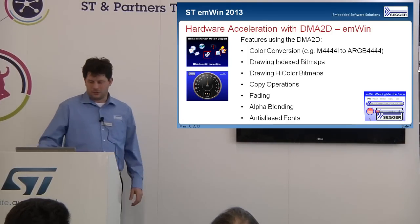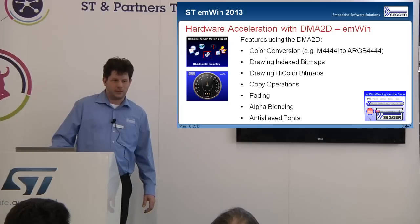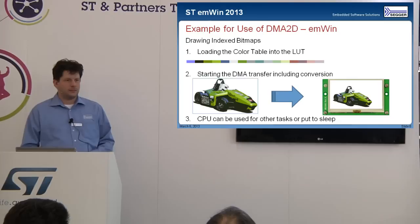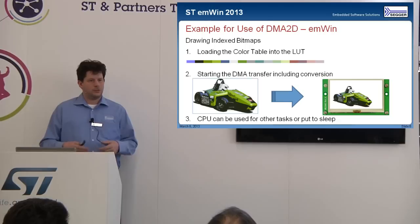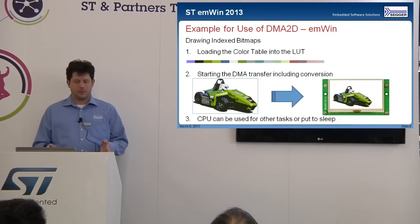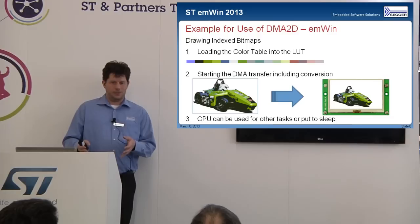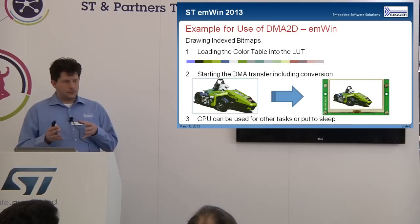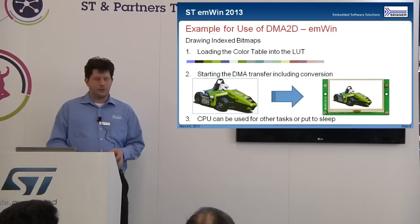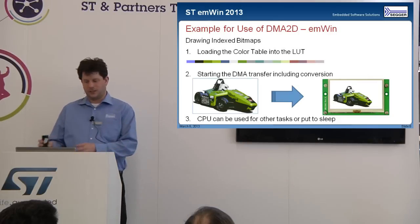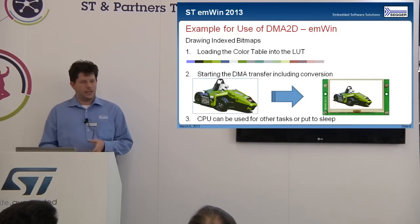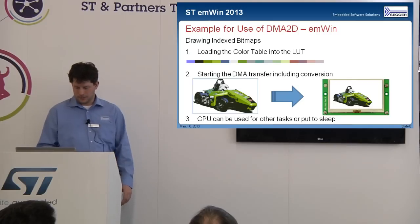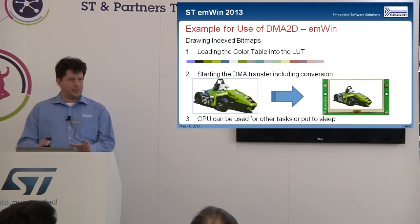As an example, when drawing indexed bitmaps, the DMA2D allows you to load your color table into the lookup table. Then you tell the DMA where the picture is and where it should go, and you start the transfer. At that point, the CPU is done — you can use the CPU for something else or put it to sleep to save power. That's essentially how it works and what we implemented in our software.